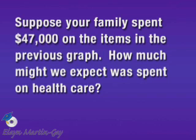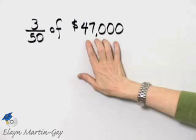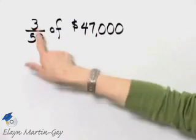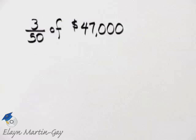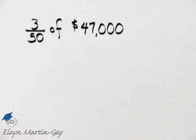My question to you is, how much might we expect was spent on health care? To answer that, since this was how much was spent on everything in the circle graph and 3/50 is the average spent on health care, we would find this fraction of the $47,000 that was given.